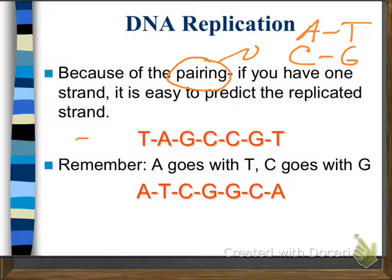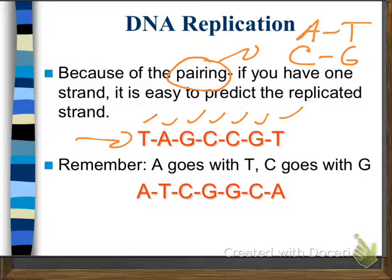Right here, we're given a strand which is thymine, adenine, guanine, cytosine, cytosine, guanine, thymine. And because we know the base pairing relationships, it would be pretty easy to pair it up.